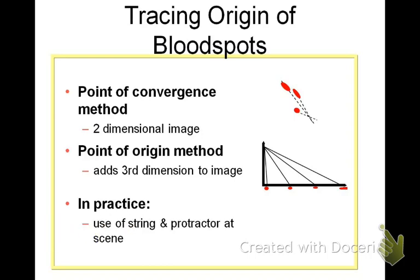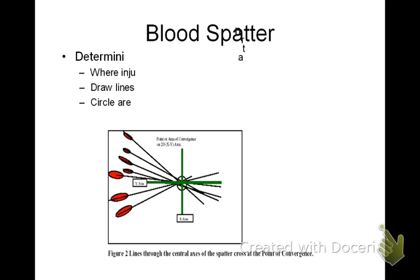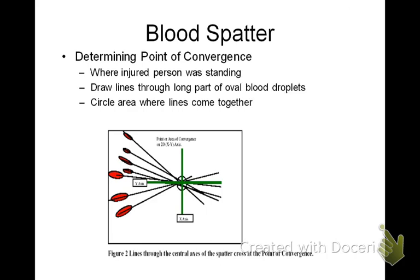In practice, string and a protractor are used at the scene, and that's what we're going to be doing in our lab. That data is then brought back to the laboratory and a computer model is generated. Point of convergence is determined by drawing lines through the long part of the oval blood droplets, then circling the area where the lines come together.